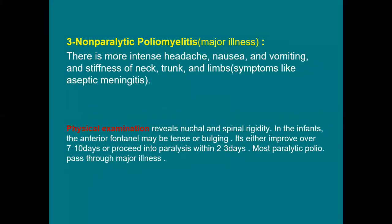The next type is non-paralytic polio, also called major illness. In major illness there is more intense headache than in the minor type, nausea and vomiting, with neck stiffness and stiffness in the limbs and trunk. The symptoms resemble aseptic meningitis, which is a viral meningitis. On examination there will be neck and spinal rigidity.